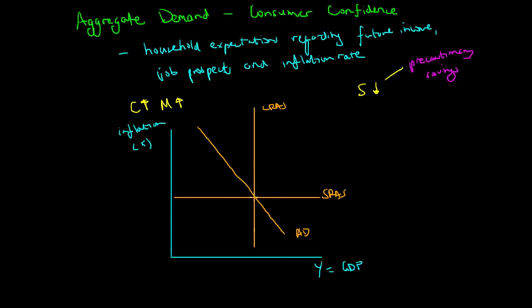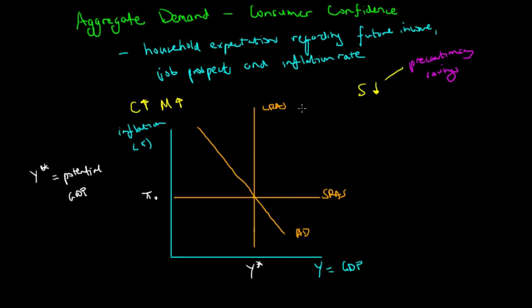We assume the economy starts at equilibrium at pi zero and Y-star, which is the potential output of the economy. Y-star equals the potential GDP — the maximum amount of GDP sustainable in the long run by this economy, given the capital, labor, and technological efficacy of this economy.